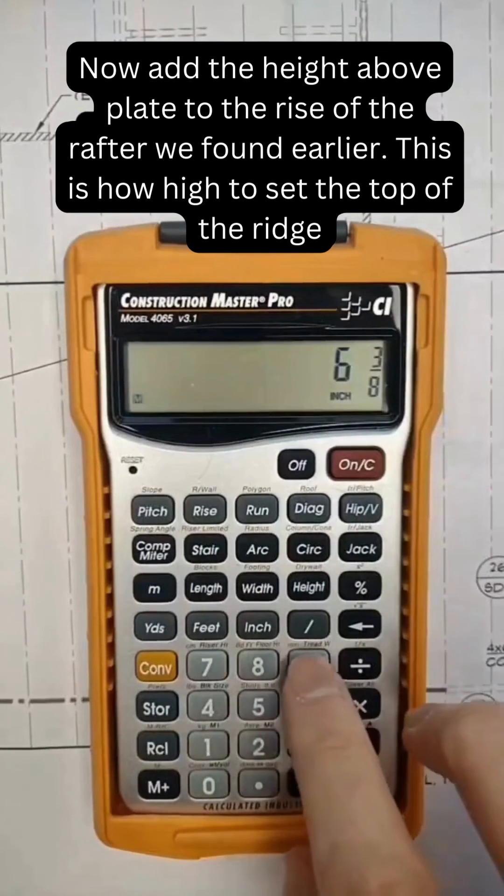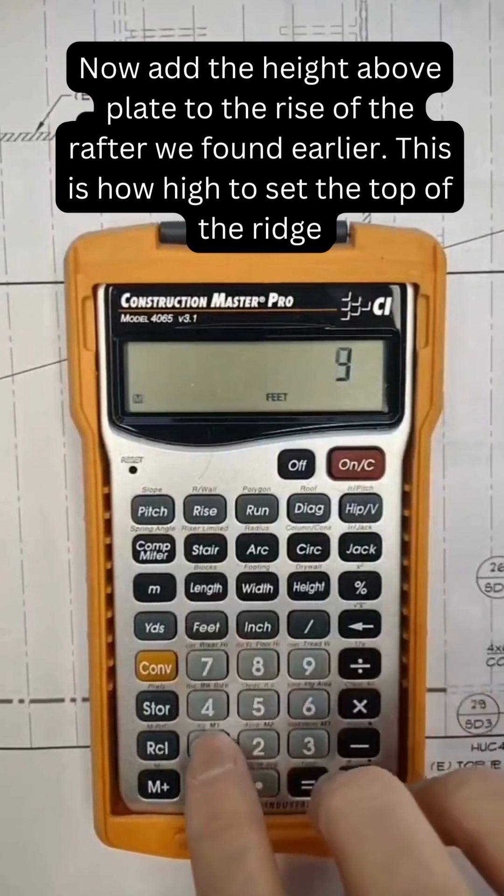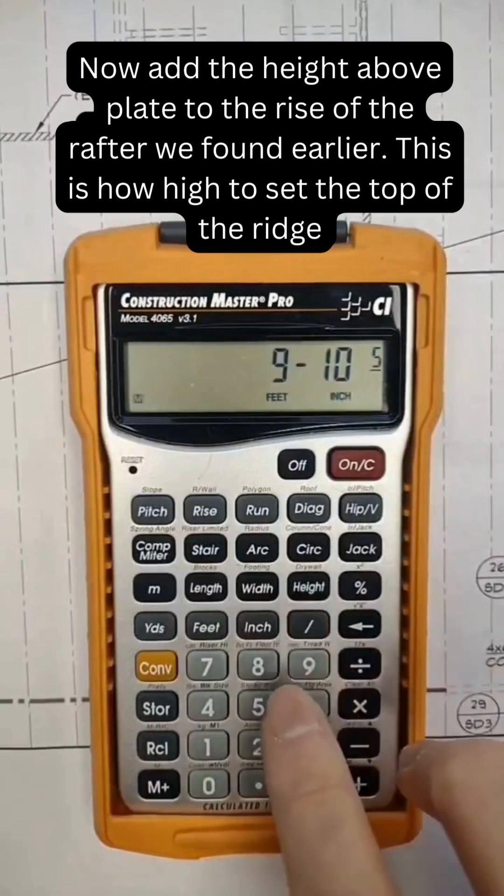Now add the height above plate to the rise of the rafter we found earlier. This is how high to set the top of the ridge.